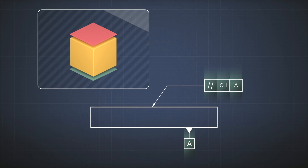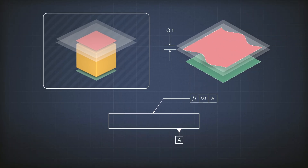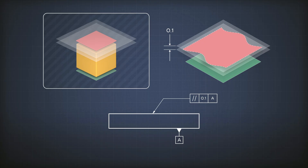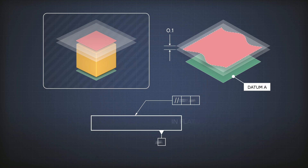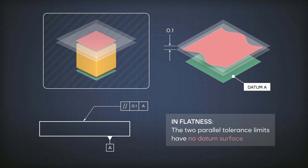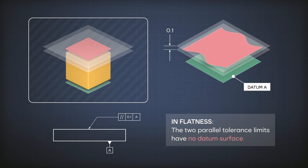What this means is that I have to create two surfaces that are parallel to A, and the distance between these two surfaces is 0.1. Notice the difference here between this and flatness: my two surfaces of the tolerance zone are parallel to A — they are forced to be parallel to A. In flatness, those two parallel planes were not parallel to any other element; they were only parallel to each other and tried to achieve the best value of flatness for the surface.